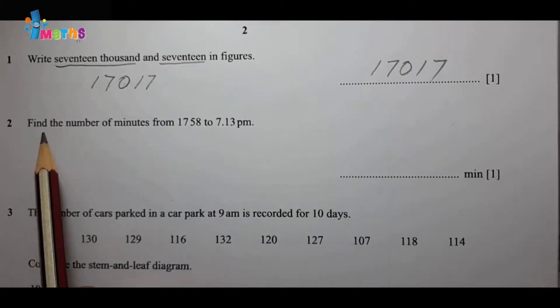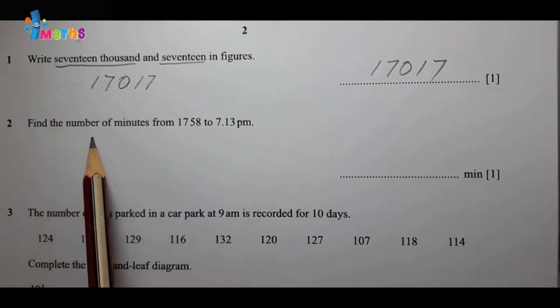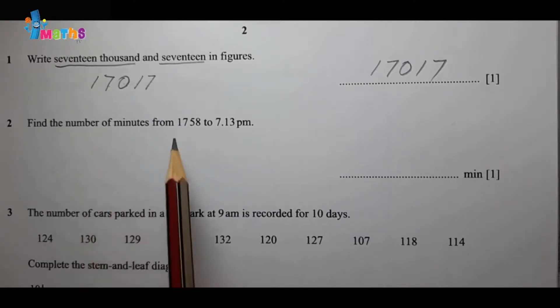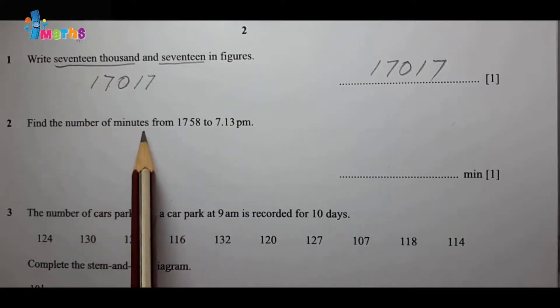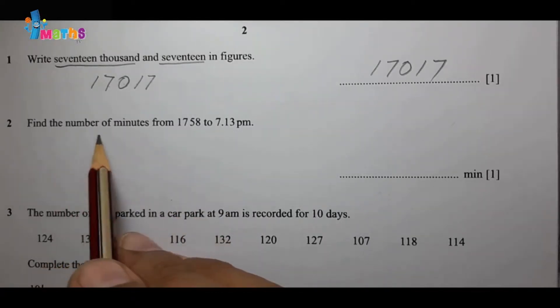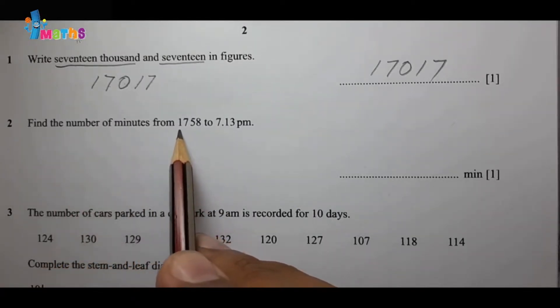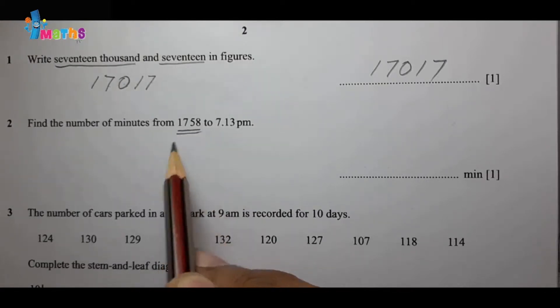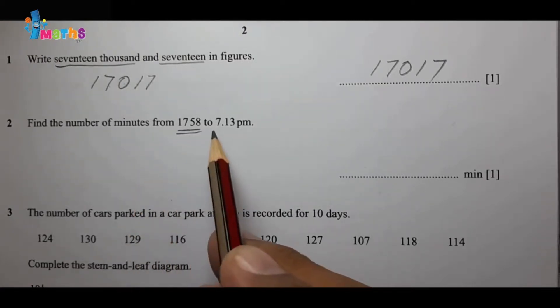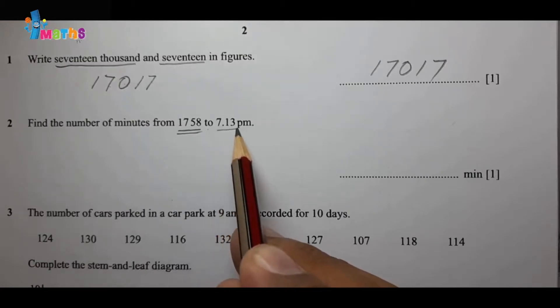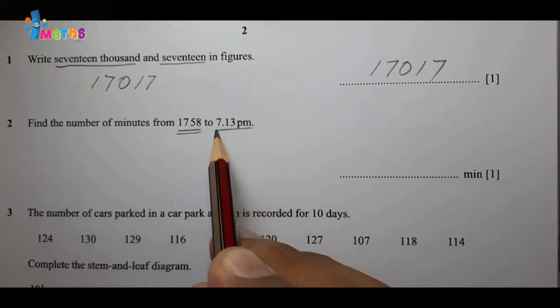Now let us start question number 2, which is basically a time question. This is confusing for most students, but let us solve it in an easier way. Find the number of minutes from 1758 to 7:13 PM.